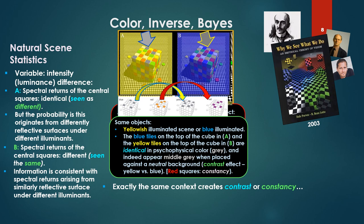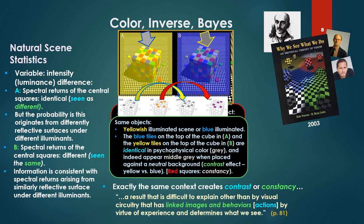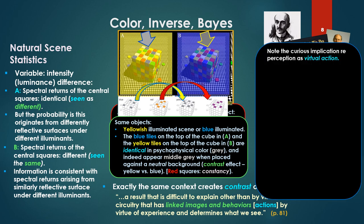Here's another case, same objects as we've just seen, but now you have a yellowish illuminated scene or a blue illuminated scene. The blue tiles on the top of the cube in A and the yellow tiles on the top of the cube in B in this case are identical. The blue tiles there on either block are gray, they're the gray tiles, and yet in different contexts they're seen either as blue or yellow. And they will appear as middle gray if placed against a neutral background. So here you have this contrast effect. Exactly the same context creates contrast or constancy.